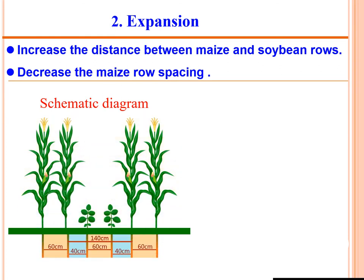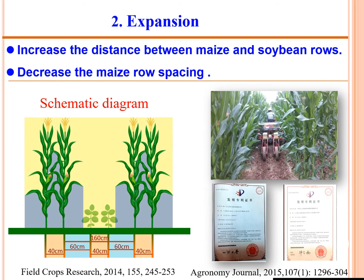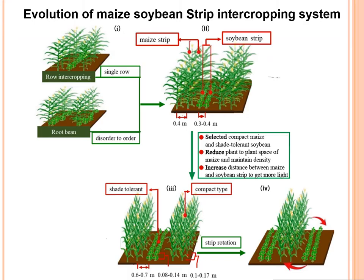In the expansion technology, we increase the distance between maize and soybean rows and decrease the distance between maize rows, which improves light transmittance at the top of the soybean canopy. For the shrinking technology, we reduce the distance between maize and soybean plants to increase planting density. Crucially, our strip intercropping system uses the same planting density of maize as farmers use in sole cropping systems.